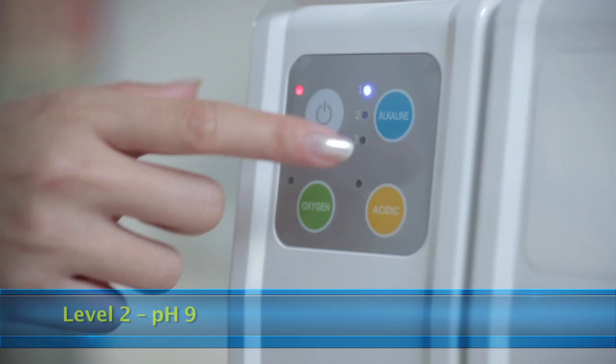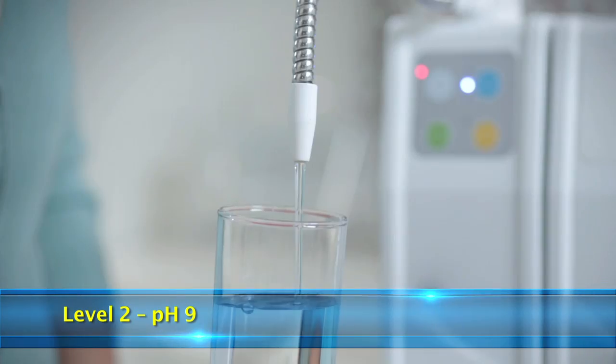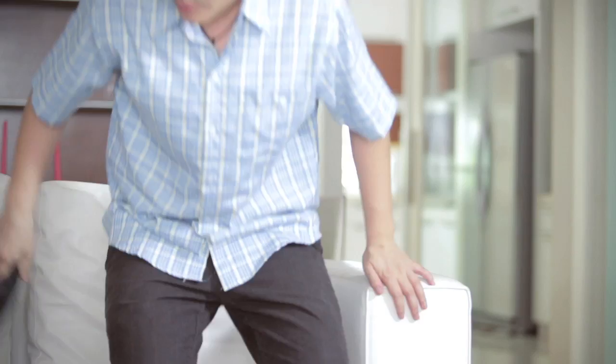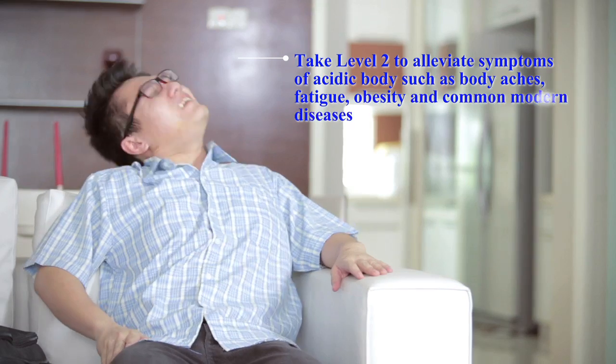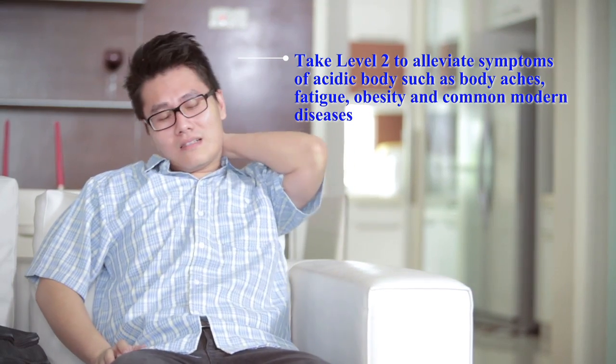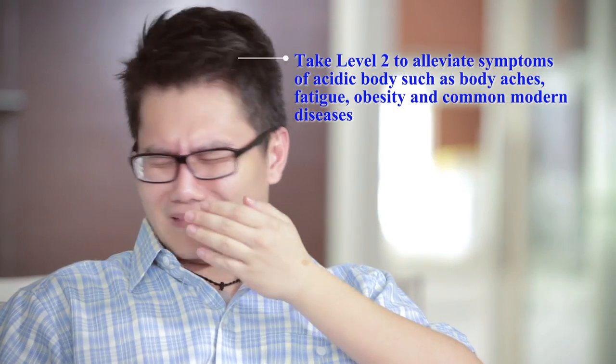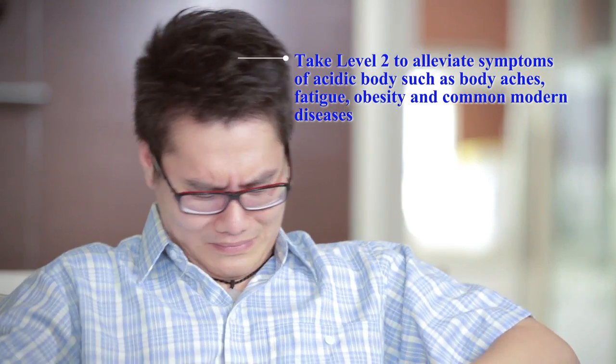Level 2 with pH 9 is recommended if more alkalinity is needed for those experiencing symptoms of acidic body, including body aches, fatigue, obesity, and other common modern diseases.